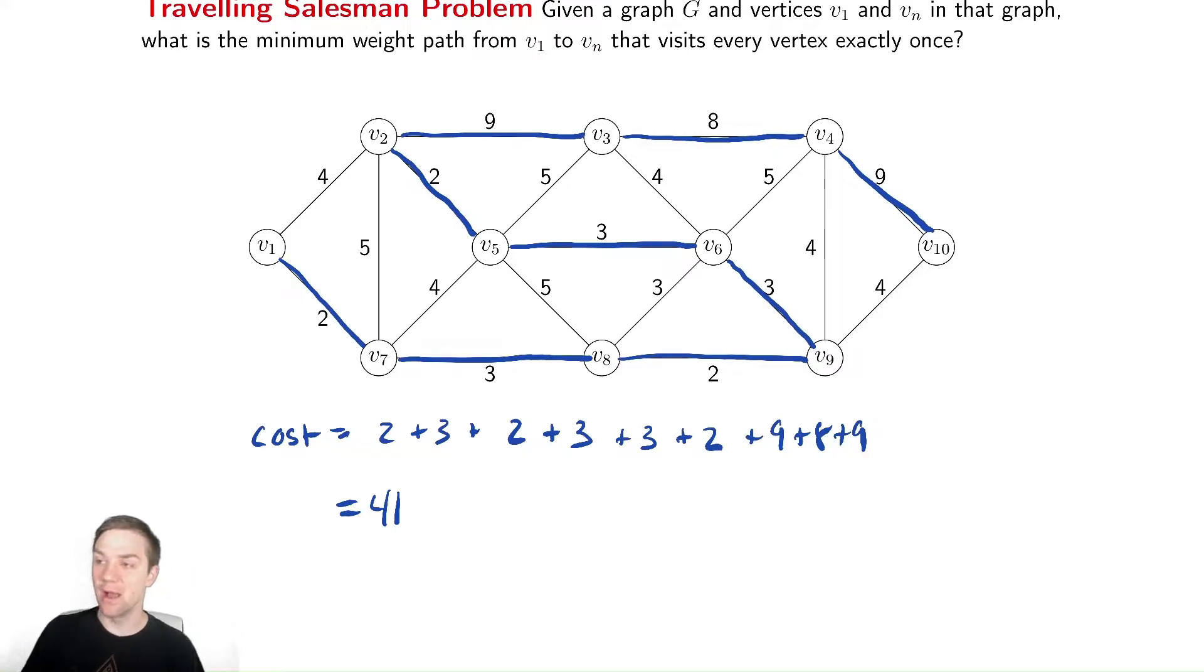Can we do better though? I want you guys to try and find a shorter path that touches every vertex exactly once in this graph. It is possible. Try and play around for a minute or two and just see if you can come up with a better way. Try and diagnose why is this path in particular very bad and see if you can avoid that issue. So try and do that, see what you can do. Hopefully you can figure it out.